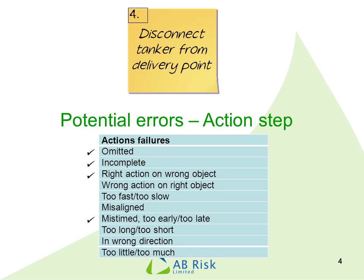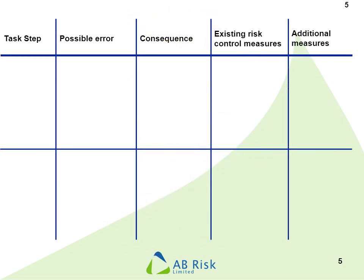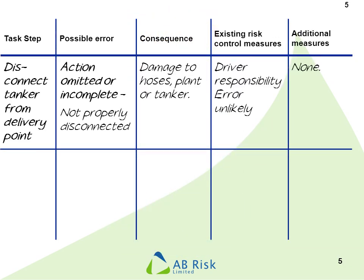We've looked at two steps so far where we've said that whilst different error types may occur, the consequences and the way we control the risks will essentially be the same. Let's look at step number four: disconnect tanker from delivery point. As before, we've identified a number of different error types. When we fill the table in this time, we've put the task step in — we've got action omitted or incomplete, essentially the same.